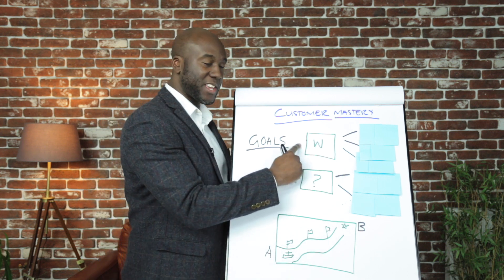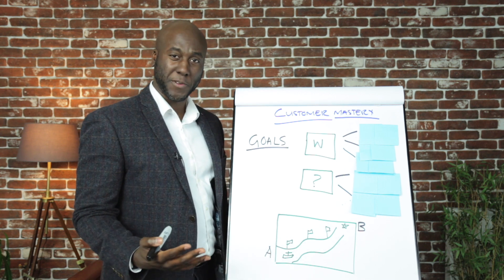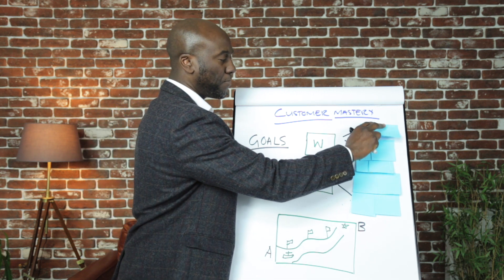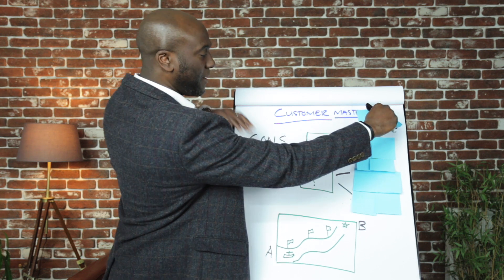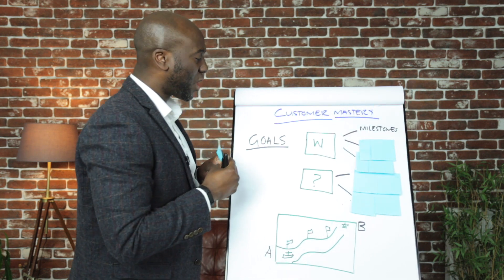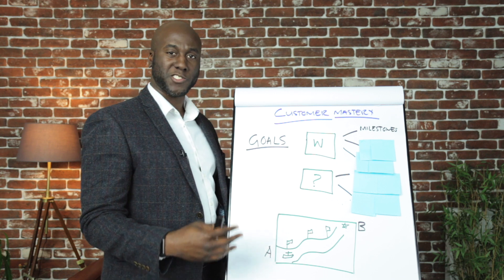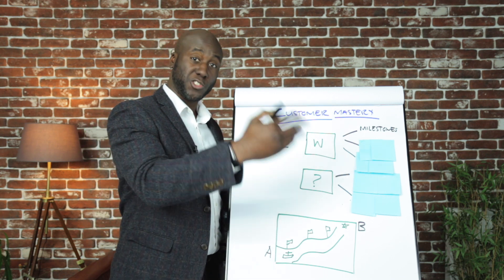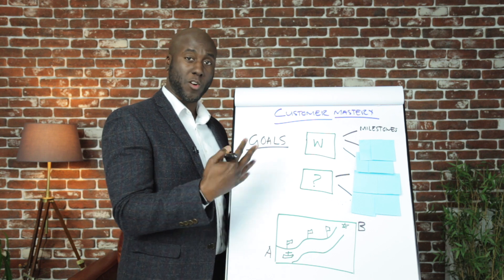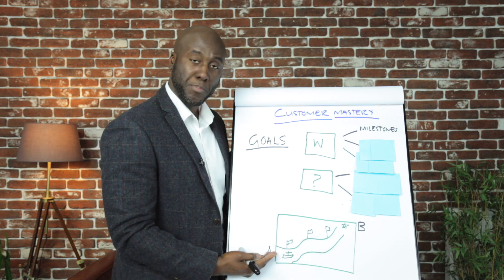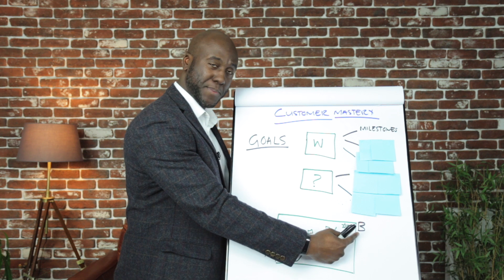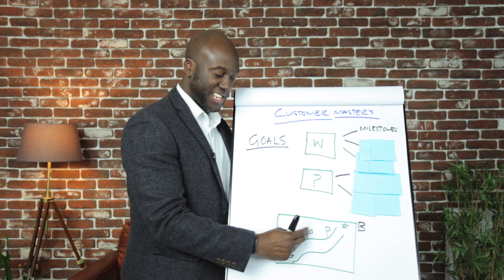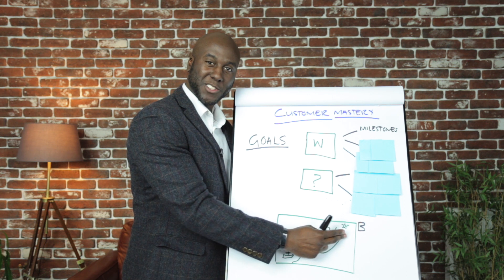So the first thing we're going to look at here is the what — what specifically is a goal and how should we look at this? The first component I'd like you to consider is that goals are milestones. They are specific check marks that allow you to see if you're getting closer to achieving the specific outcome or result that you want. Think of taking a boat from A to B — each specific goal gives us an indication of how close we are to the outcome.